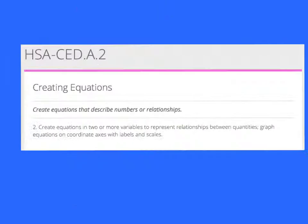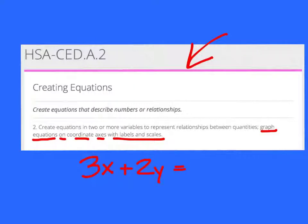Today's objective, creating equations that describe numbers or relationships and you must be able to graph equations on coordinate axes with labels and scales. So we're practicing all this before we even really get to this objective. You're going to be given a table of values and such and you're going to create an equation that looks like maybe 3x plus 2y equals something, maybe 10 and you have to put it into a form that you can graph, but we have to do all this graphing stuff before we get to it.